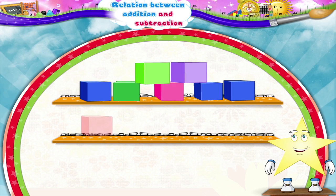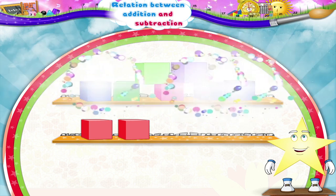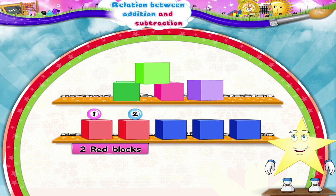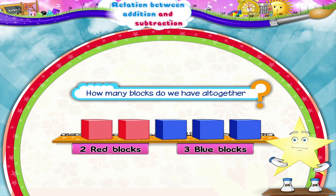Let's take two red blocks and three blue blocks and put them in a line. One, two. Two red blocks. One, two, three. Three blue blocks. How many blocks do we have all together, Starry?